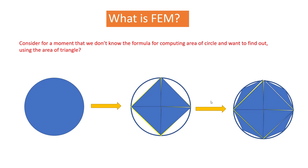We can again fill the leftover regions with even more triangles, moving further towards the exact solution. This is the core concept of FEM: it divides your problem into simpler sub-domains — in this case, triangles are the sub-domains for which the solution is known — and then combines those solutions using the variational concept. We can also say that FEM is mainly based on a divide-and-rule policy.